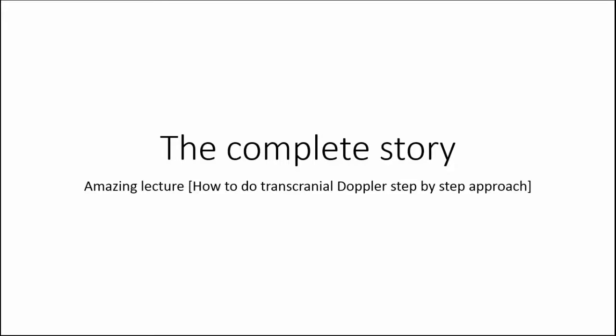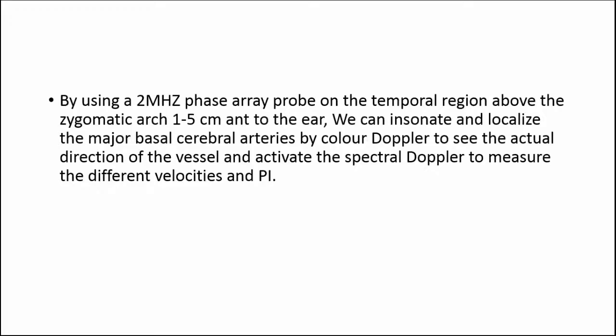Good morning everybody, welcome back to the Complete Story. Today's lecture will cover how to perform transcranial Doppler step-by-step using a 2 megahertz phased array probe on the temporal region above the zygomatic arch, one to five centimeters anterior to the ear. We can insonate and localize the major basal cerebral arteries by color Doppler to see the actual flow and direction of the vessels, and activate spectral Doppler to measure velocities and pulsatility index.